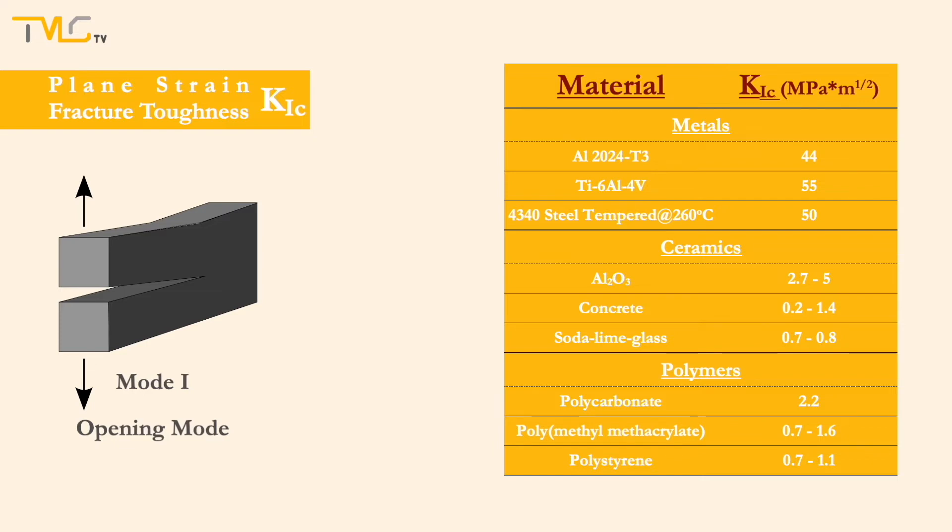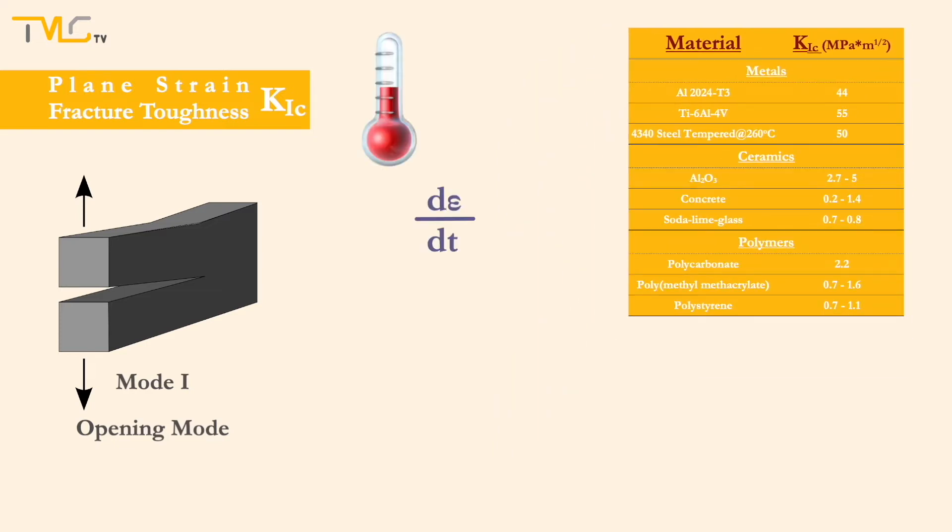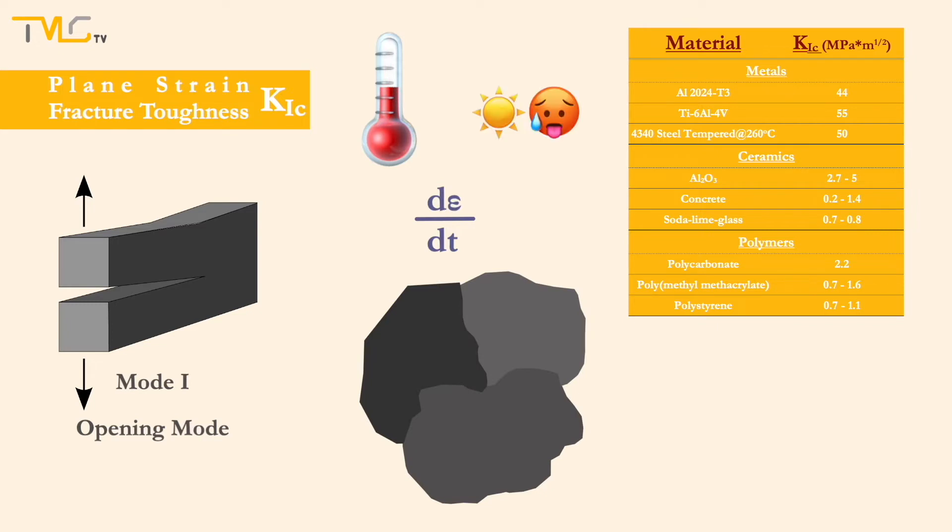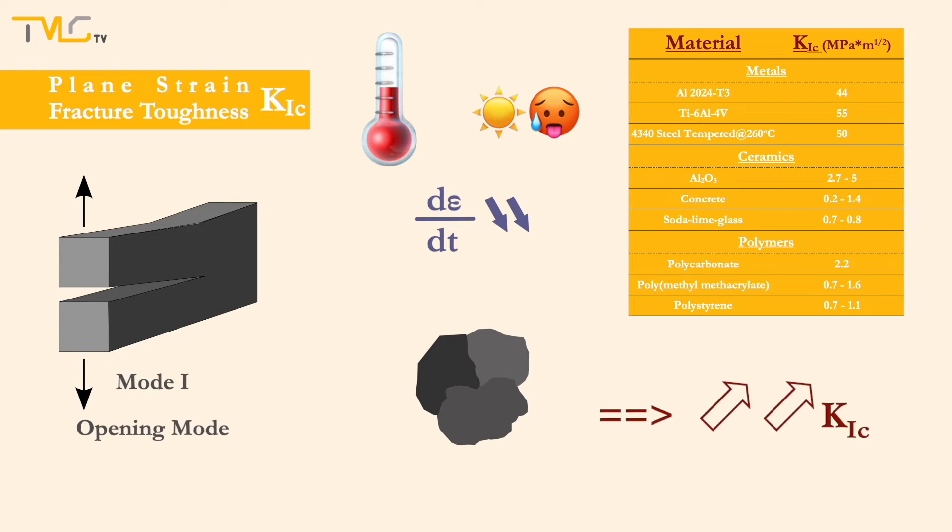K1c of a material strongly depends on the temperature, strain rate, and microstructure. Thus, higher temperatures, lower strain rates, and finer grains promote higher K1c values.